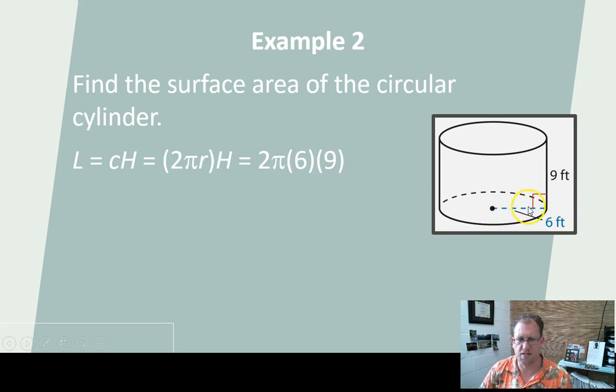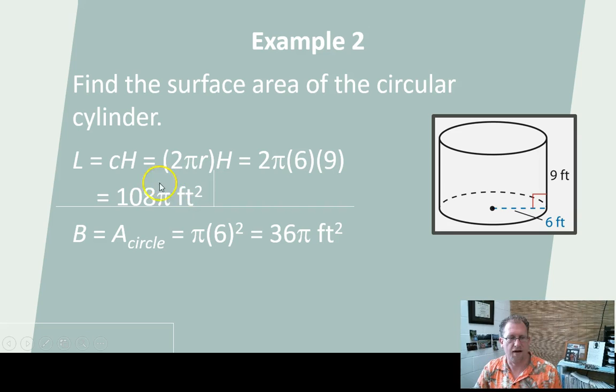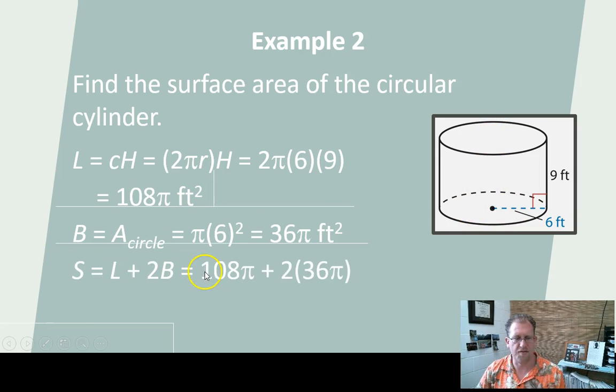So 12 times 9 is 108. 108 times π is going to give me my lateral area. And then the base is πr², so π times 6 squared, 36π, is going to be the area of one circle. I have two of those, so I need to add them together.